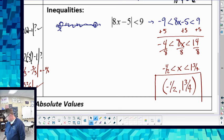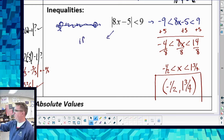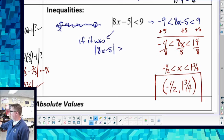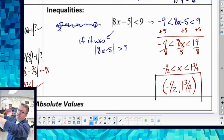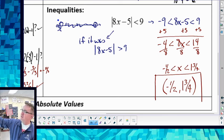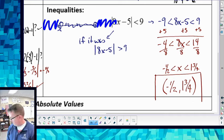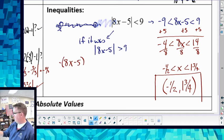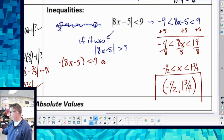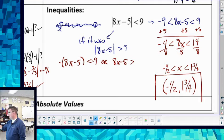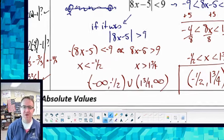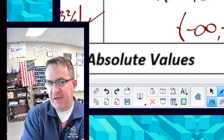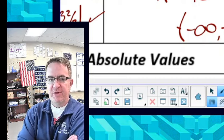Now, if it was 8x minus 5 is greater than 9, then at that point I would be on the outsides of here. I would be in this area and this area. Those don't overlap, so I can't put them in together with one. So I would say the opposite of 8x minus 5 has to be less than negative 9, or 8x minus 5 has to be greater than 9. And I would solve those out. So hopefully that gives you something to work on, have some basis, have some notes for it. We'll continue to have this pop up in class from time to time. So with that, hopefully that will get you on your own way, and we will see you in a bit.